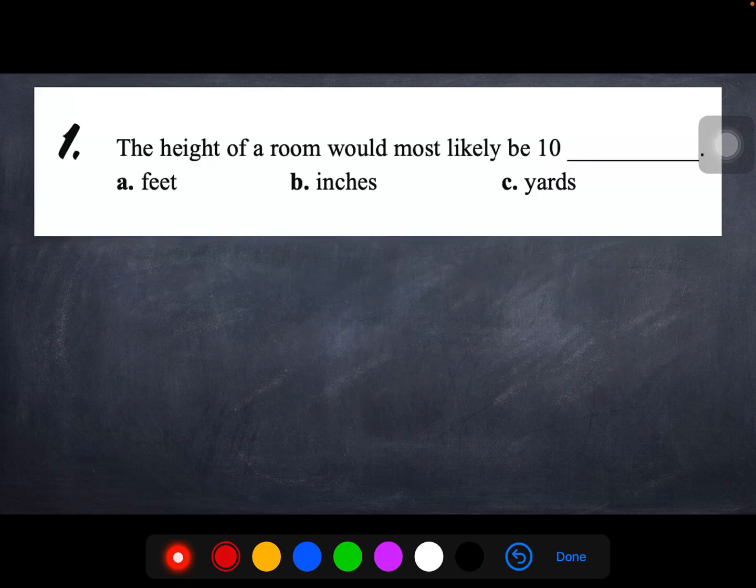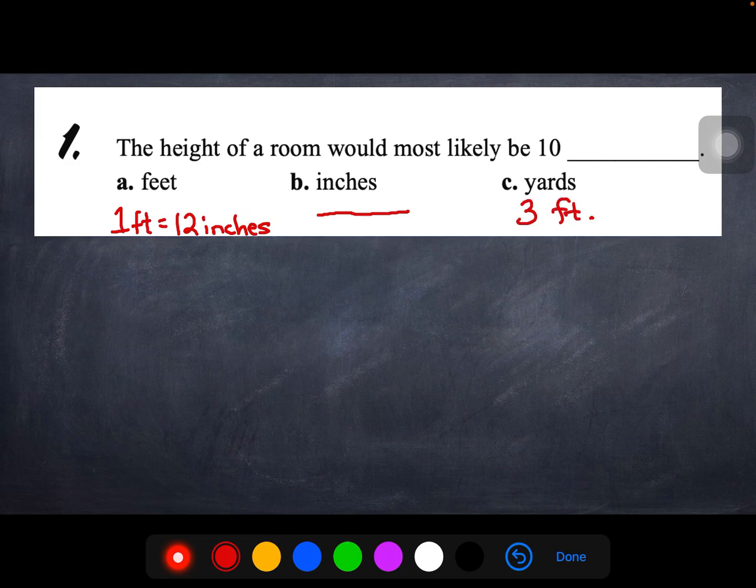Number 1. The height of a room would most likely be 10, is it feet, inches, or yards? Well, 1 foot equals 12 inches. So inches, if you measure between the bottom of your bottom lip and right under your nose, that is about an inch. And then a yard is 3 feet. So the height of my room, and rooms can be different, but most likely it's going to be 10 feet. 10 yards would be a really tall room, and 10 inches would be way too short for me. So it is feet, 10 feet.